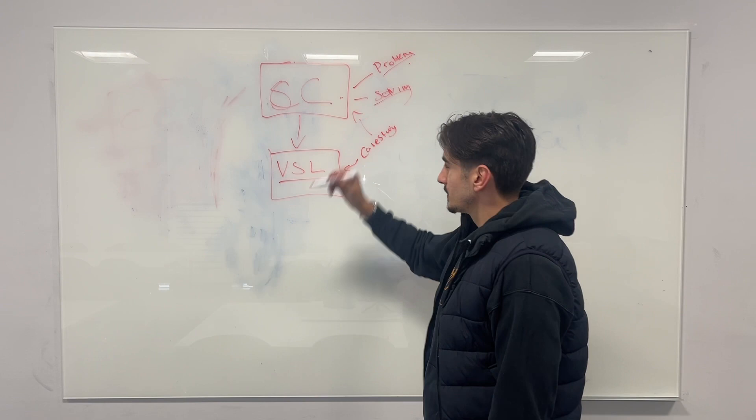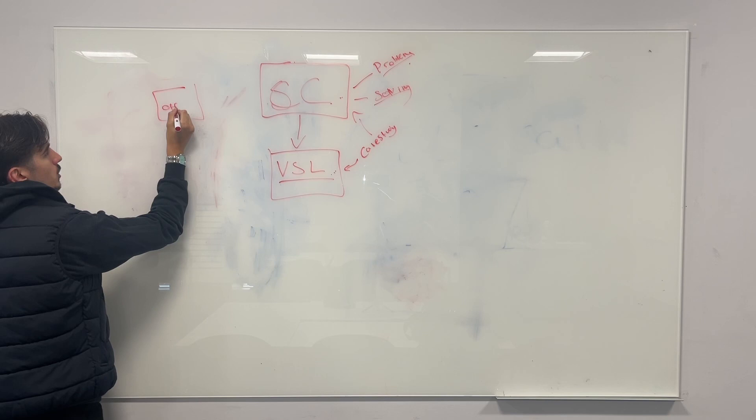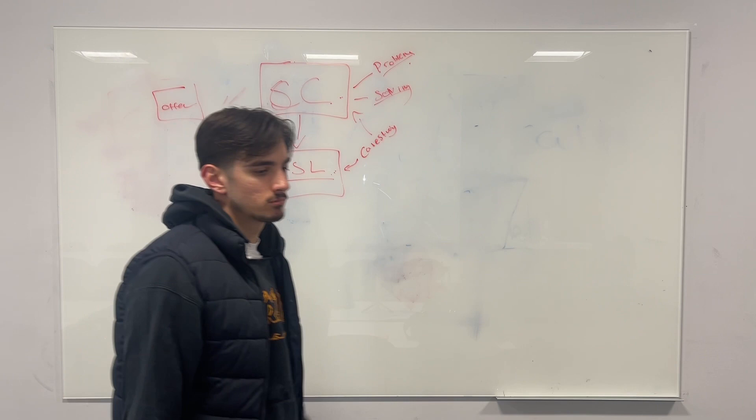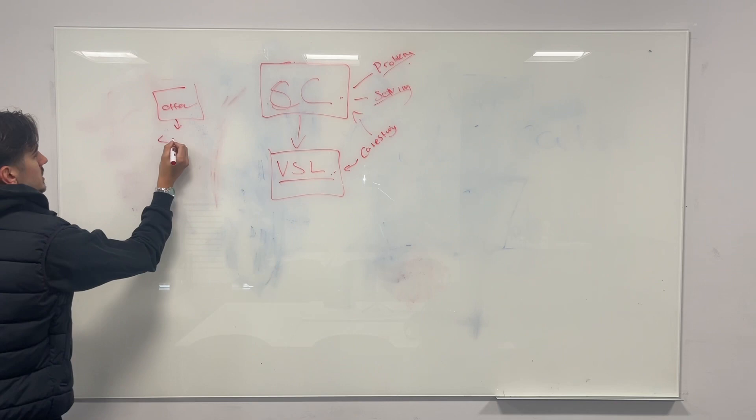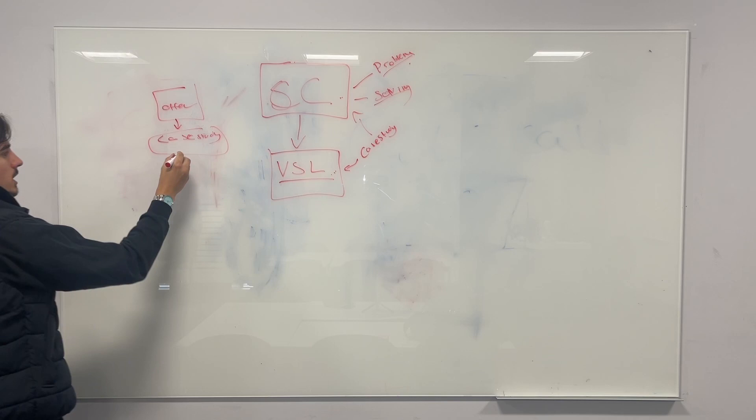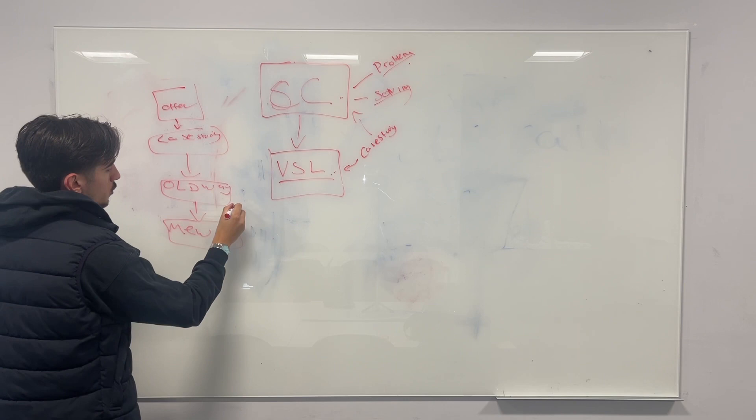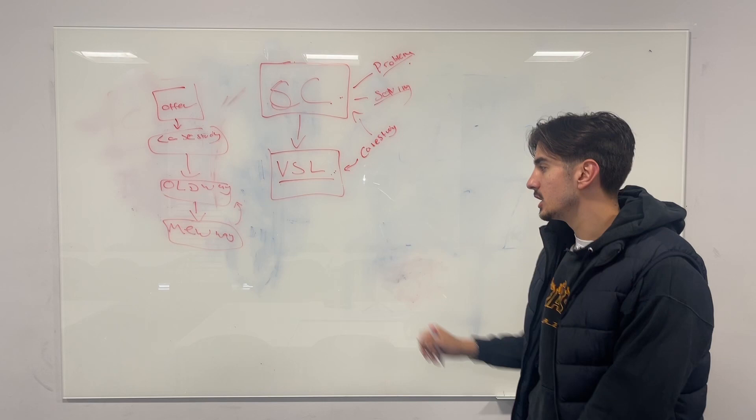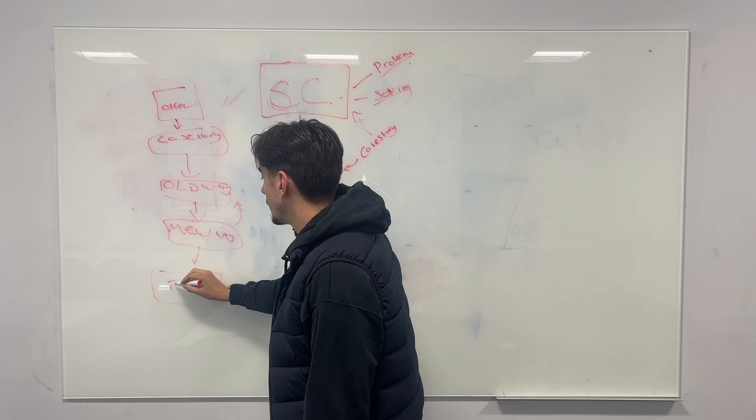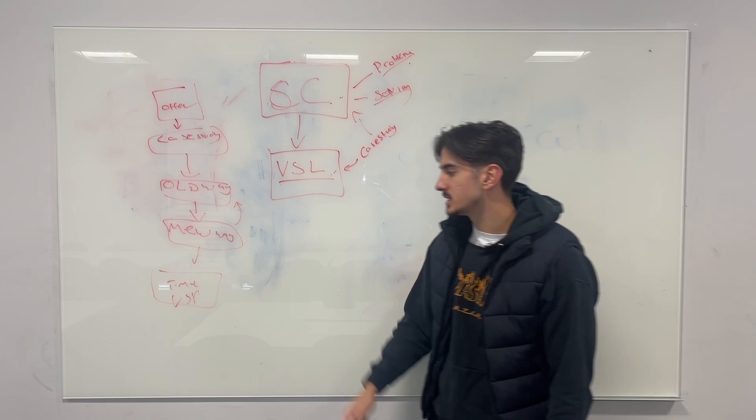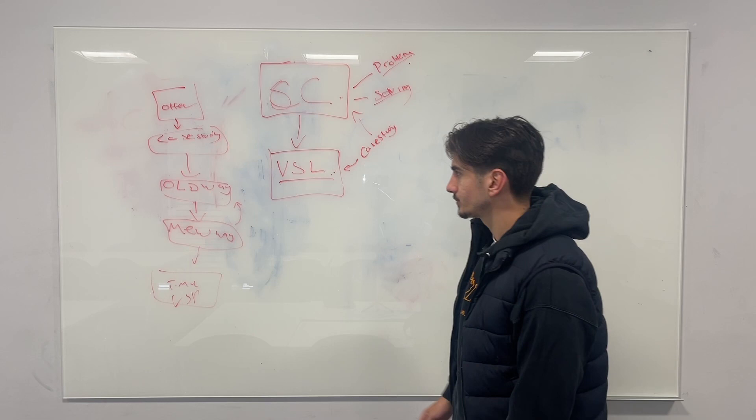So this VSL is a video sales letter. Pretty much the structure off the top of my head is you're pretty much going to say what you offer, so who you're selling to. You know, we help roofers add an extra 15 qualified leads to their business every single month or you don't pay. And then you're going to talk about case study. So maybe the one you're going to showcase, but then you're going to show them the old way of doing things and your new and improved way.